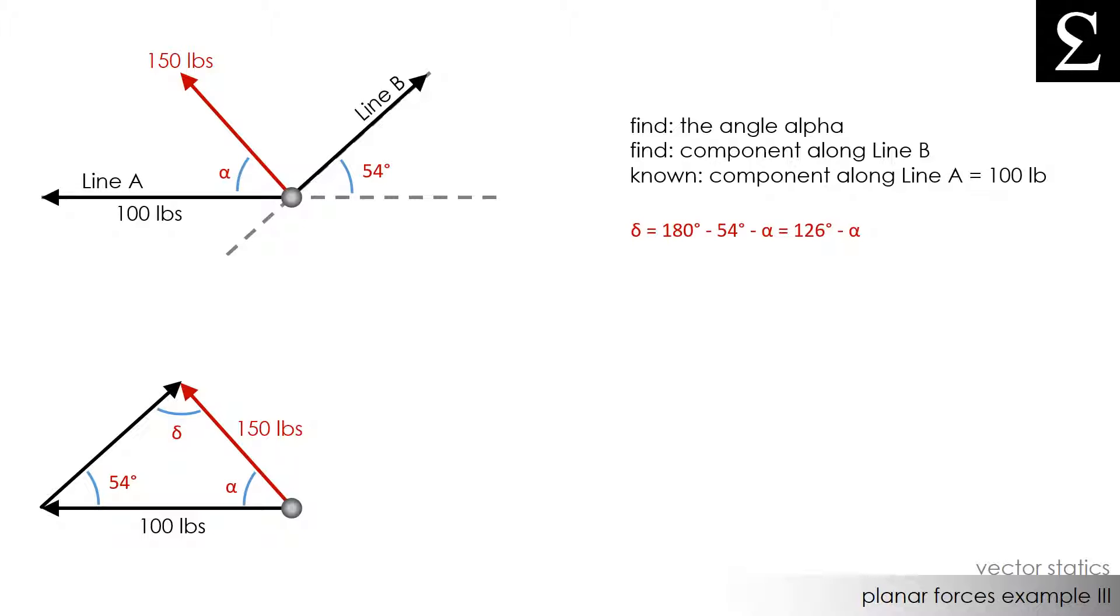I'm going to call our unknown side here B. Let's use the law of sines to first figure out what angle alpha is going to be. I can write that sine of delta divided by 100 pounds equals sine of 54 degrees divided by 150 pounds.